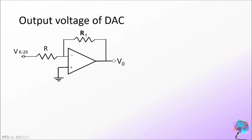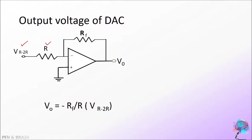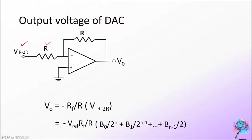In the R2R ladder DAC, the final equivalent circuit is obtained as shown, where VR2R represents the Thevenin's equivalent voltage and R represents the Thevenin's equivalent resistance. The output voltage of the op-amp is VO equal to minus RF by R into VR2R. Substituting the value of VR2R, we get the expression: minus VRef into RF divided by R into V0 by 2 raised to n, plus V1 by 2 raised to n minus 1, plus dot dot dot, plus Vn minus 1 divided by 2. This expression gives the output voltage of an n-bit DAC.